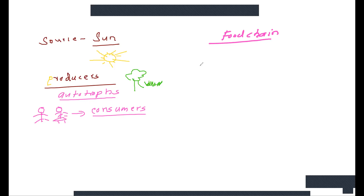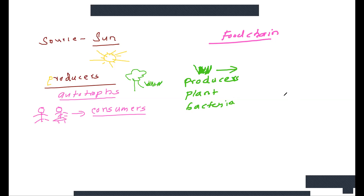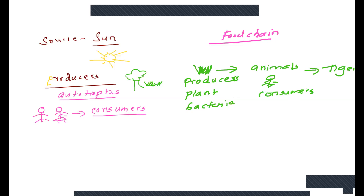A food chain always starts with the producer. Sometimes the producer can be other than a plant — it also can be bacteria. And then you have either animals or us — we are consumers. Tigers can eat us or can eat another animal.